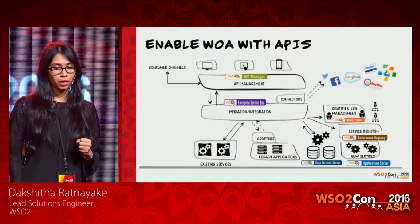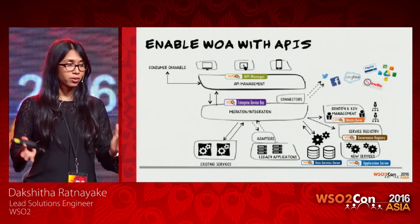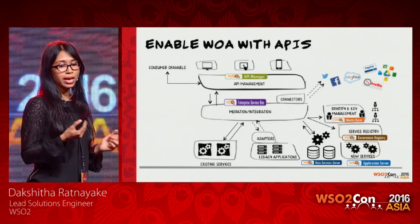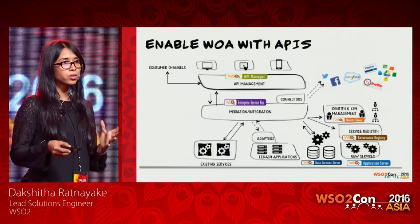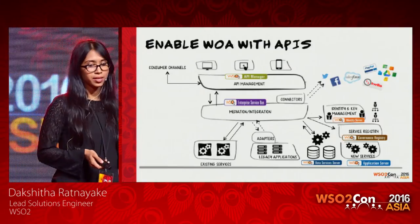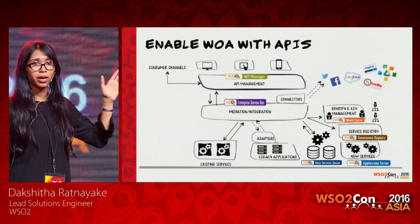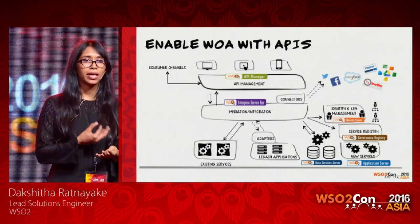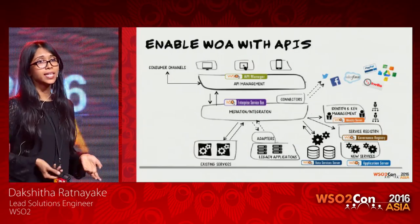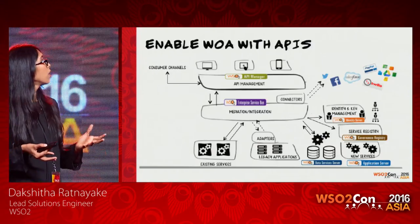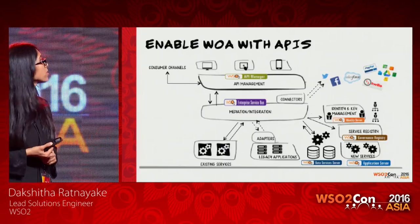Next is how you can have a complete web-oriented architecture in your enterprise. We use the API manager to create an API layer — or API facade layer — basically exposing your entire business as APIs. Your consumer channels or the UI layer of your web applications will communicate with the API manager directly. The API manager allows you to manage the usage of your APIs, derive statistics, and come up with revenue models based on API usage.